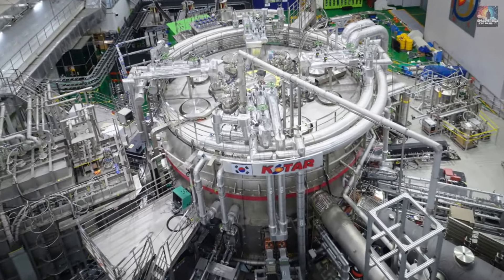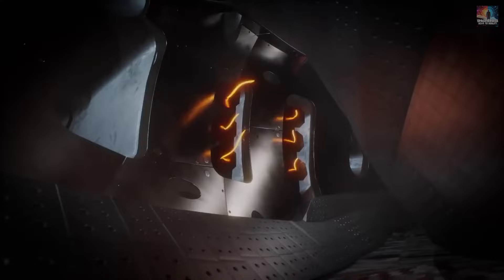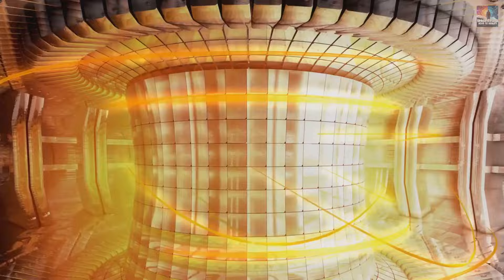South Korea's special reactor, nicknamed the Artificial Sun, recently achieved a remarkable feat. It heated a loop of plasma to an extremely high temperature of 100 million degrees Celsius for 48 seconds. This beats its own previous record of 31 seconds set in 2021.